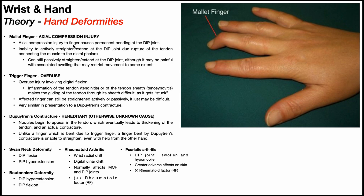For most people that's digit three, although it could also affect digits four and two depending on where the contact occurred. It's common in basketball, volleyball, or other contact sports where something might be forcibly hitting your hand, specifically your fingers.